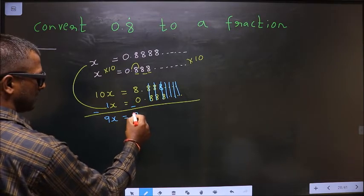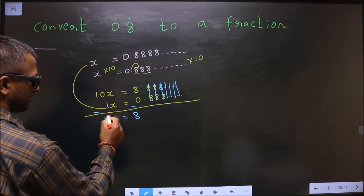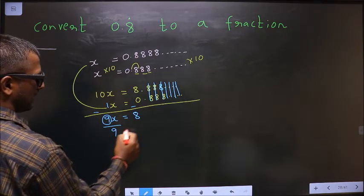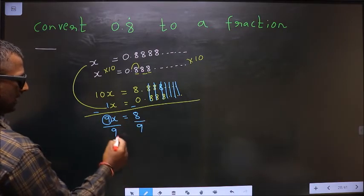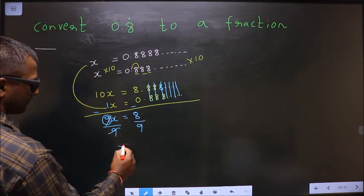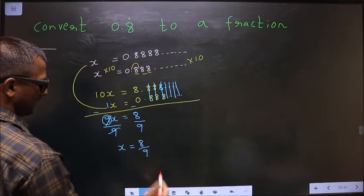So 8 minus 0 is 8. So now to get x I should remove this 9. For that, divide by 9 on both sides. So I get x equal to 8 by 9.